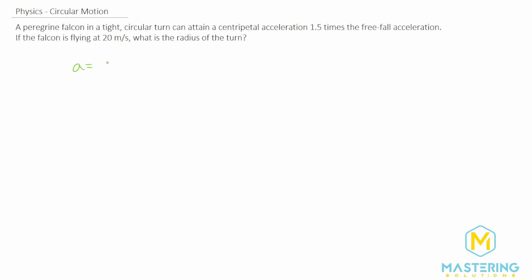We'll be using the formula for acceleration, and for circular motion it's v squared over r. They tell us that acceleration in this case is 1.5 times free fall acceleration, which of course is 9.8 meters per second squared. The speed that it's going is 20 meters per second, and we want to find out what the radius is.